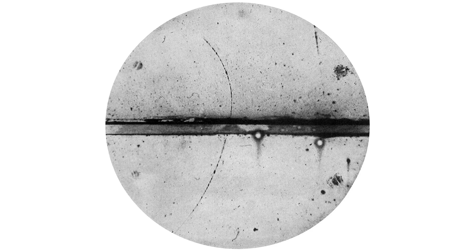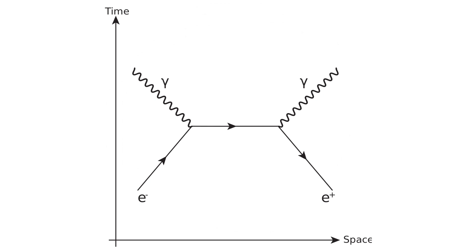Negative masses imply negative energies through the energy-mass equivalence. It is obvious that antimatter has positive energy and mass, because annihilation between a matter particle and its antimatter counterpart — both with the same absolute values of energy — results in a positive energy outcome regardless. If antimatter had negative energy and thus negative mass, the outcome of annihilation would be zero for energy conservation to hold.